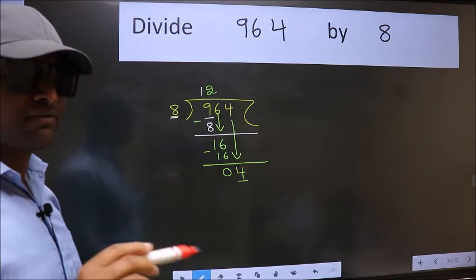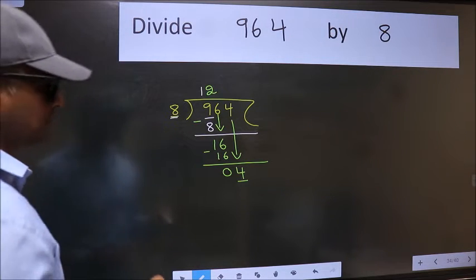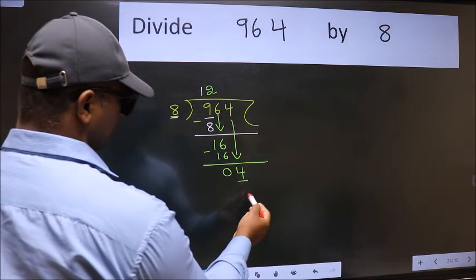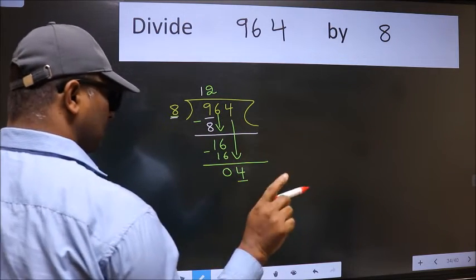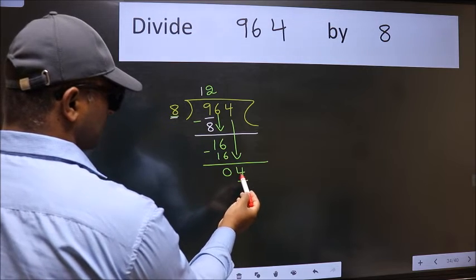Instead of that, what we should think of doing is, which number should we take here. If I take 1, we will get 8. But 8 is larger than 4.